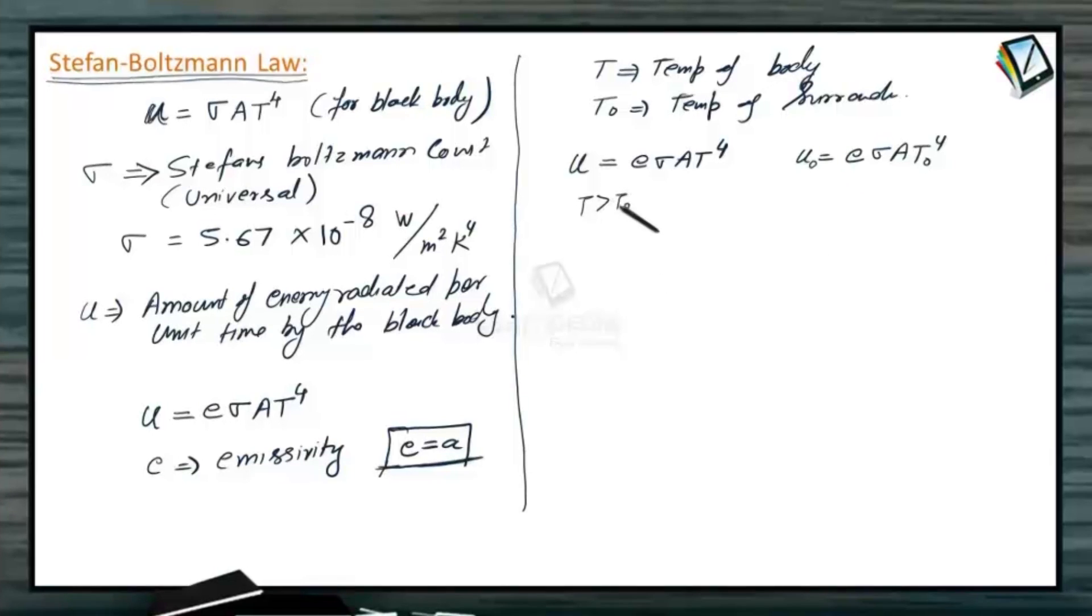So, let's suppose T is greater than T naught. So, net rate of heat loss in this situation is going to be U minus U naught means U is the rate of radiation and it is the rate of absorption. So, U minus U naught is the net rate of heat loss. So, delta U is going to be U minus U naught means E sigma A can be taken out as common. So, T raised to the power 4 minus T naught raised to the power 4. So, this is the equation for amount of energy, net rate of loss of energy by the body whose temperature is T. And it is kept in a surrounding of temperature T naught. So, this is the Stefan's Boltzmann law means the rate of radiation is proportional to the fourth power of the absolute temperature.